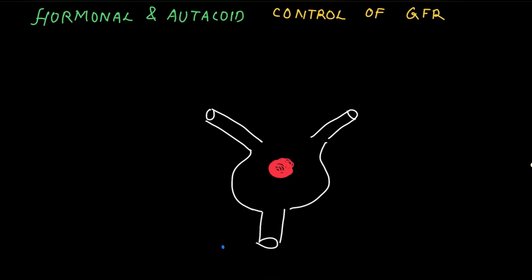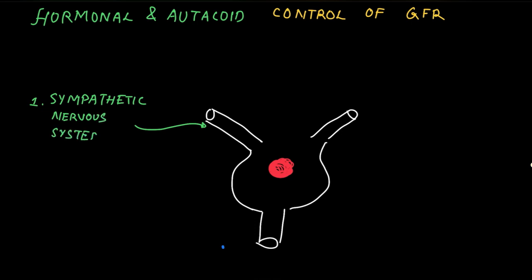First we will talk about the division of the autonomic nervous system called the sympathetic nervous system. This division is called the sympathetic nervous system because tachycardia occurs in response to sympathetic stimulation — for example, when we have sympathy for somebody's injury, there is tachycardia. So this is known as the sympathetic nervous system.